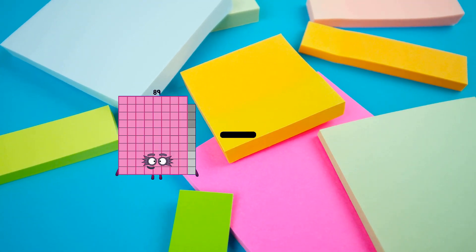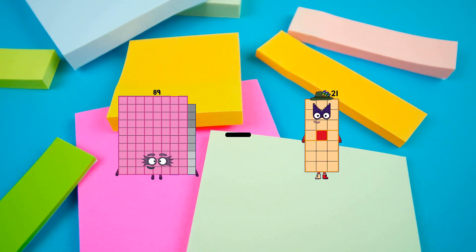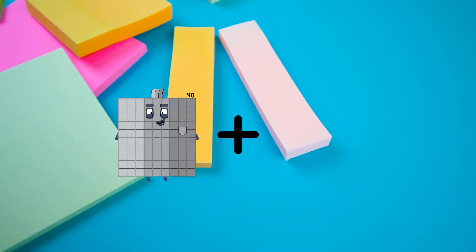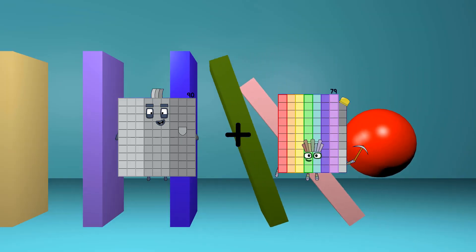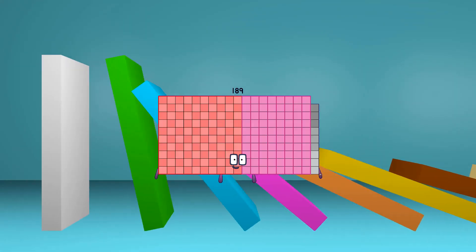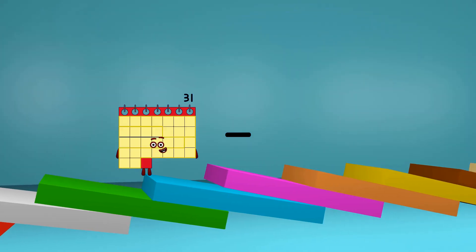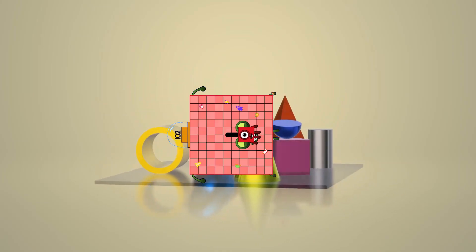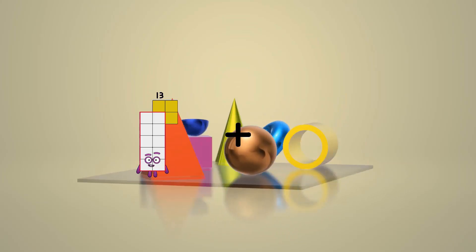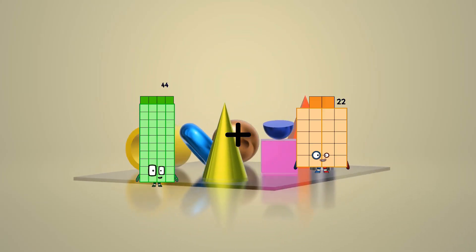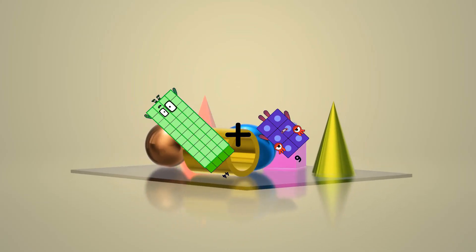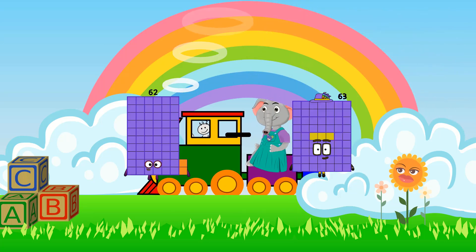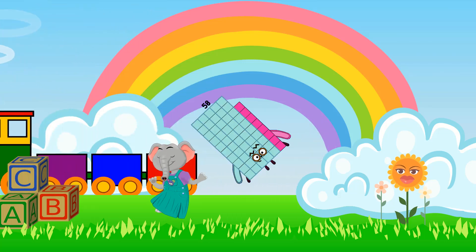89 minus 1 equals 88. 90 plus 99 equals 189. 102 minus 1 equals 101. 44 plus 6 equals 50. 62 minus 4 equals 58.